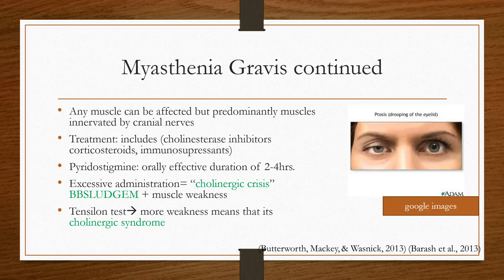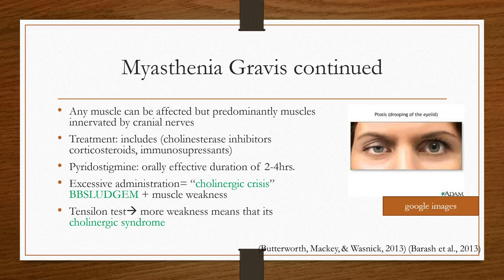We all know the SLUDGE mnemonic for cholinergic crisis. One of the interesting things is that counterintuitively patients also have muscle weakness. So if a patient presents with profound muscle weakness, you give them edrophonium — the Tensilon test — and if they become more weak, that confirms your suspicion of a cholinergic crisis as opposed to poorly controlled myasthenia gravis.